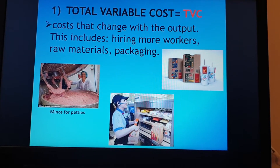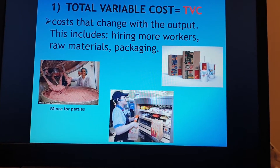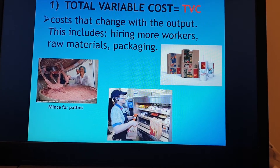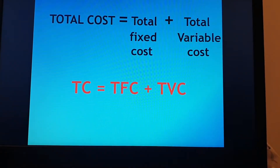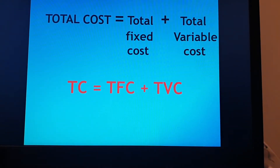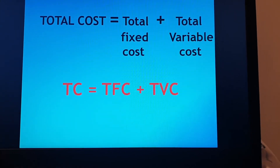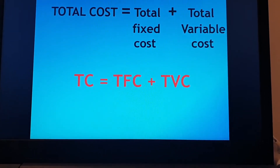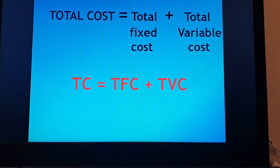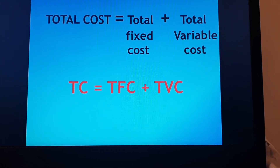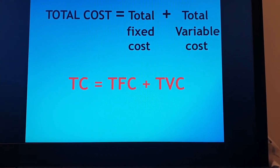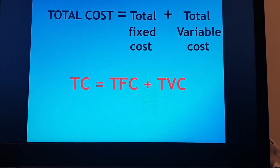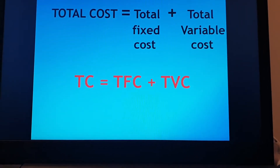For example, think of a McDonald's where they produce burgers and chips and sell them to customers — the mince to make patties would be a variable cost. The total cost therefore equals total fixed cost plus total variable cost: TC = TFC + TVC. In this topic we make use of abbreviations, so you must know what each stands for.